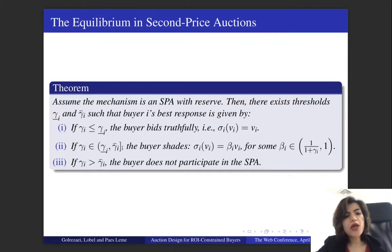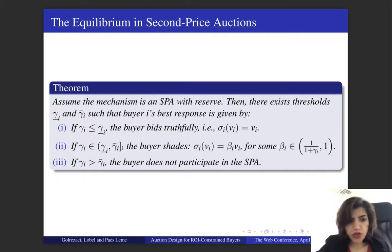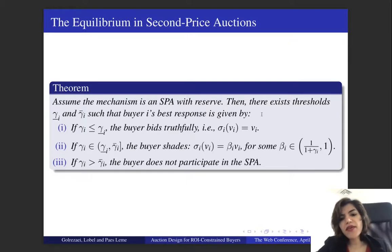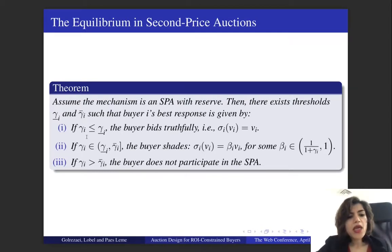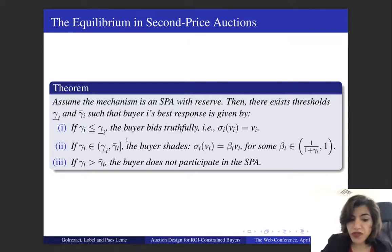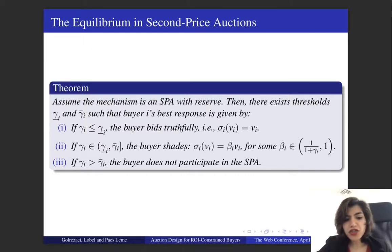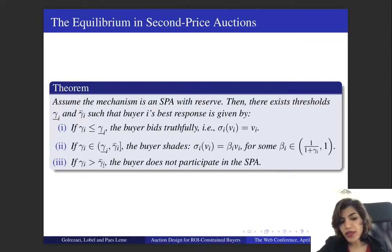First, I'm going to focus on second price auctions and understand how buyers with ROI constraints react. Suppose I'm running a simple second price auction with a reserve price. In our theorem, we show there exist two thresholds, Gamma_i-underline and Gamma_i-bar, such that the buyer's best response is as follows: if the buyer's target ROI is less than Gamma_i-underline, the buyer bids truthfully. If Gamma_i is between the two thresholds, the buyer shades his bid by submitting a shading factor times his valuation. And if the target ROI is greater than Gamma_i-bar, the buyer does not participate in the second price auction at all.